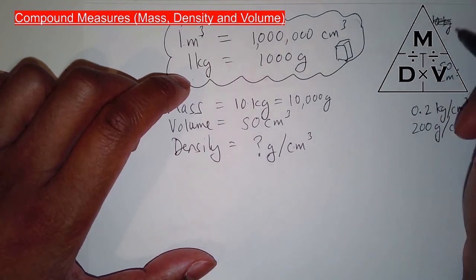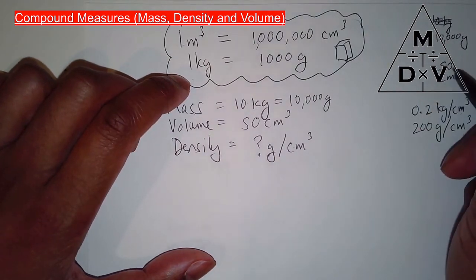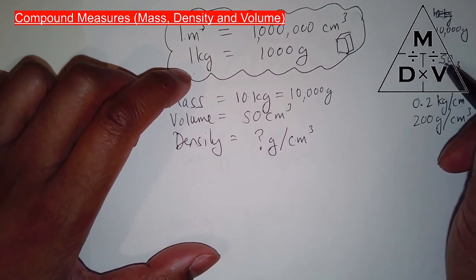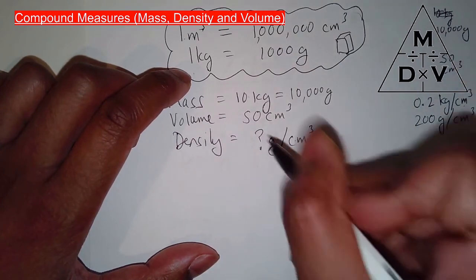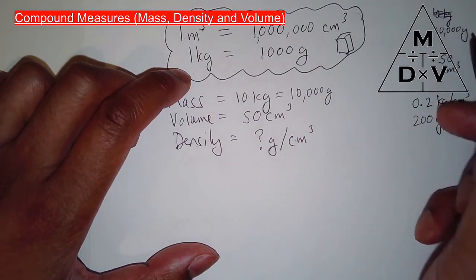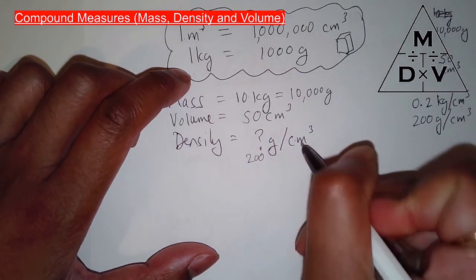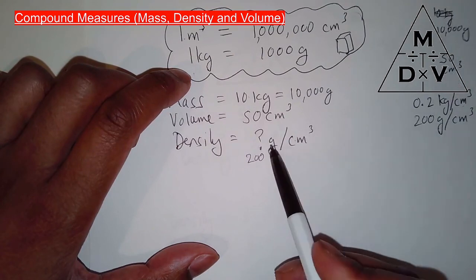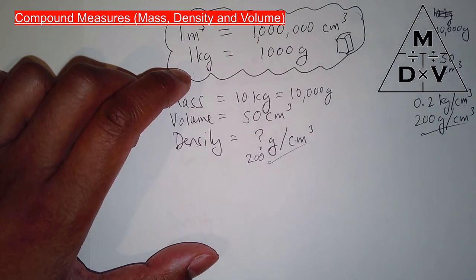Then I can just do 10,000 grams divided by 50 centimeter cubed. In this case, that would be 10,000 grams divided by 50. 10,000 grams divided by 50 will be 200 grams per centimeter cubed. Look. Grams per centimeter cubed. Grams per centimeter cubed. 200 is the answer. So either way, you'll get the same answer.